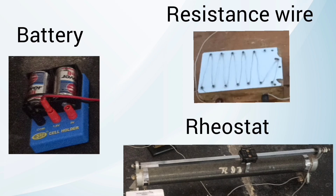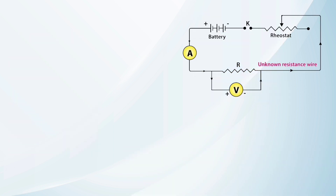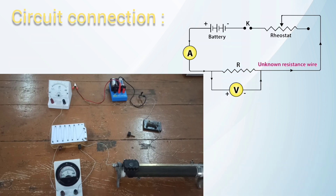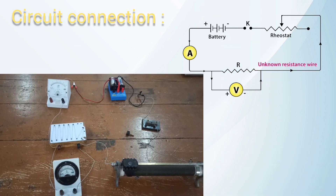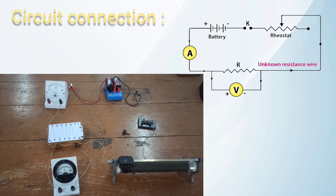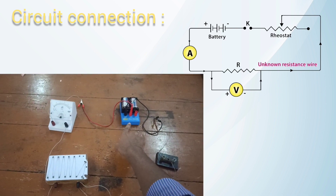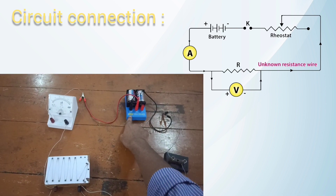The other instruments used are a battery, a resistance wire of length one meter, and a variable rheostat. From the rheostat we can vary the voltage and current. The instruments are arranged according to the circuit diagram. The connection begins from the battery positive to the milliammeter positive.